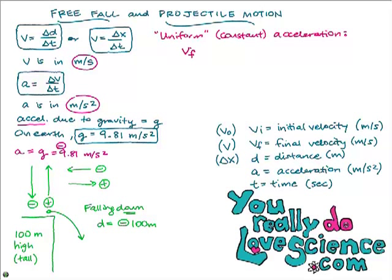The first equation is: final velocity equals initial velocity plus acceleration times time. The second equation is: final velocity squared equals initial velocity squared plus two times acceleration times distance. The third equation is: distance equals initial velocity times time plus one-half a times t squared. These are your three equations for uniform or constant acceleration during free fall.